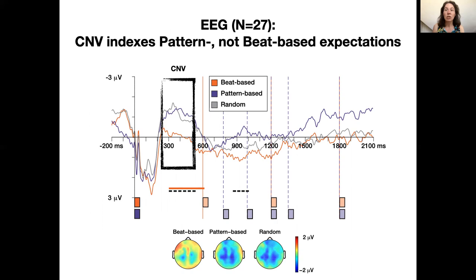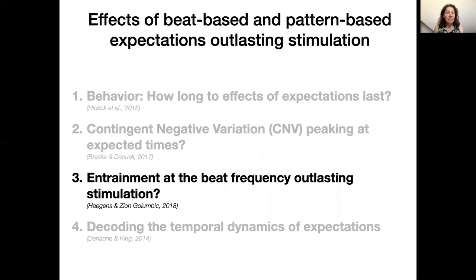This suggests that maybe the CNV could be specific to expectations for patterns, not beats. Also, the CNV does not peak at the next expected time in the pattern, which would be 780 milliseconds, but rather peaks at what is approximately the average inter-onset interval used in the pattern. Pattern-based expectations may therefore be based on learning a distribution of intervals over a longer period of time.